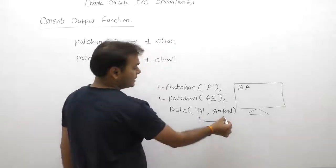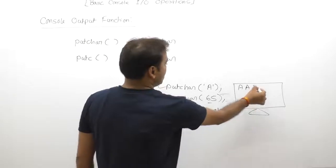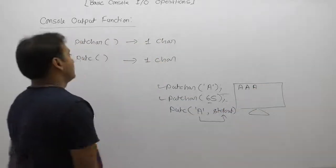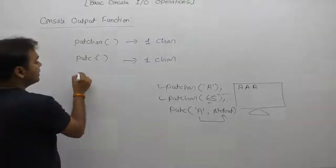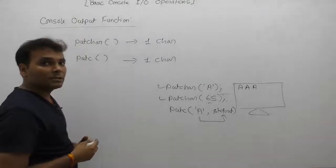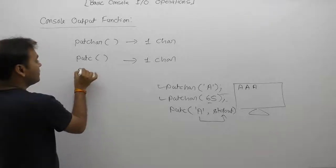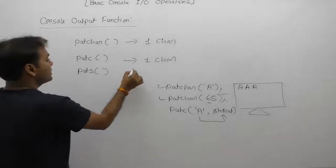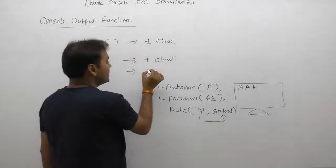putc outputs to stdout — indirectly we can say to the monitor. The previous two functions, putchar and putc, can only display a single character at a time. Next, we look at the puts function.